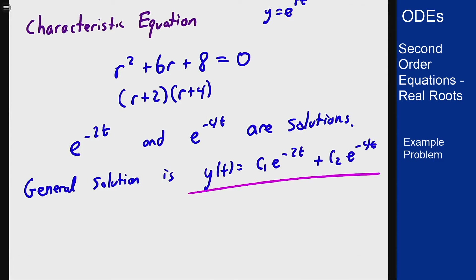To solve the initial value problem we also need its derivative, so let's take that right now. y prime of t is going to be negative 2 c1 e to the minus 2t plus negative 4 times c2 e to the minus 4t.